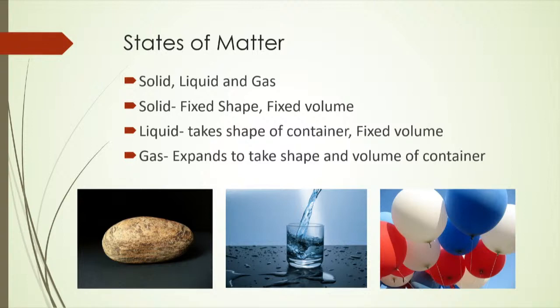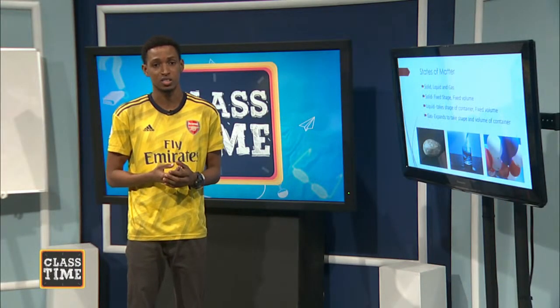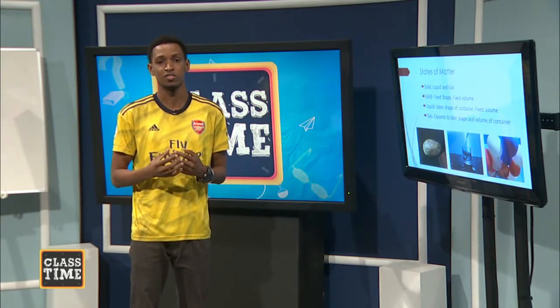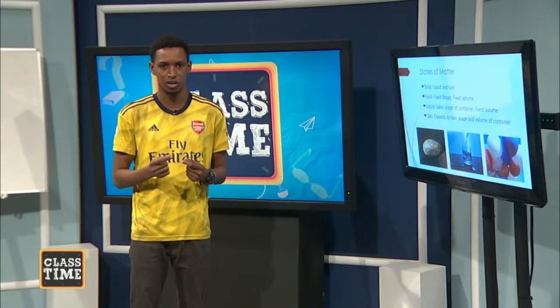Liquids don't have a fixed shape, but they do have a fixed volume. If you pour some water in a glass, the water will take the shape of the glass, but the volume of the water will remain constant. The particles aren't fixed in place like solids, so liquids have intermediate forces of attraction. Gases expand to take the shape and volume of their container. They don't have a fixed shape or fixed volume, because they have really weak intermolecular forces of attraction.